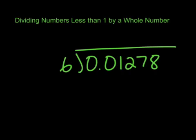0.01278 is much lower than 1, way less than 1. It's about a hundredth or about a penny compared to a loonie. We're going to divide that by 6, so we're going to get something way, way smaller than 1.